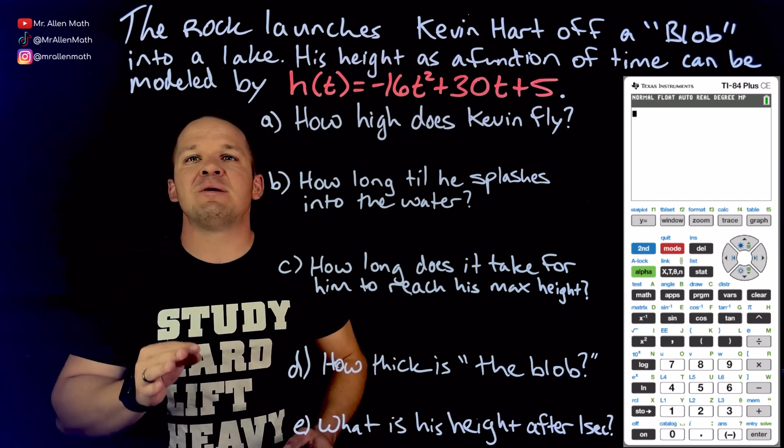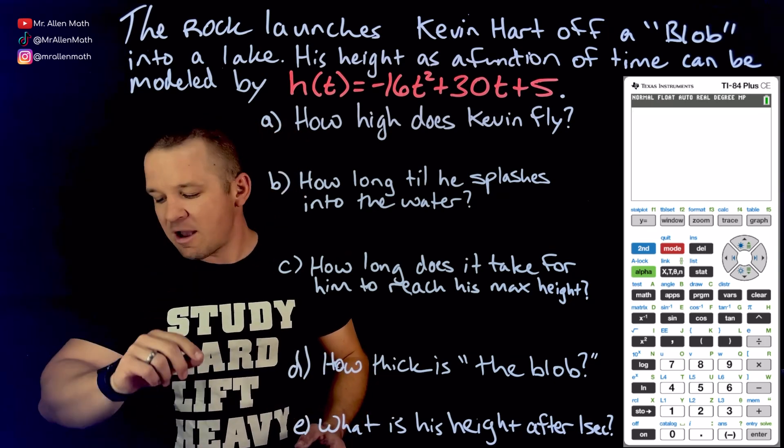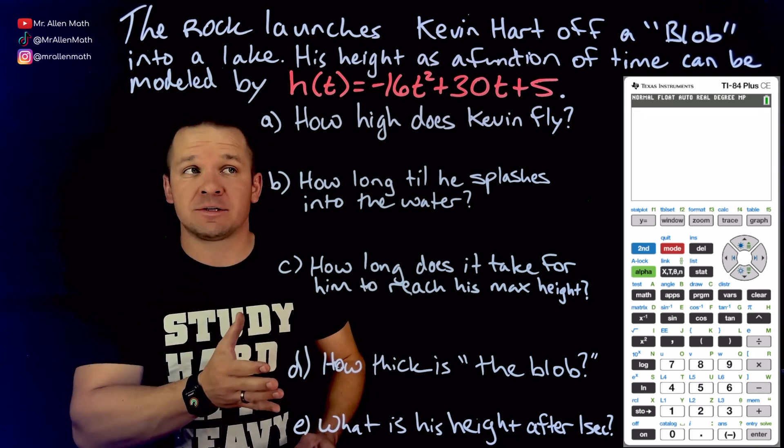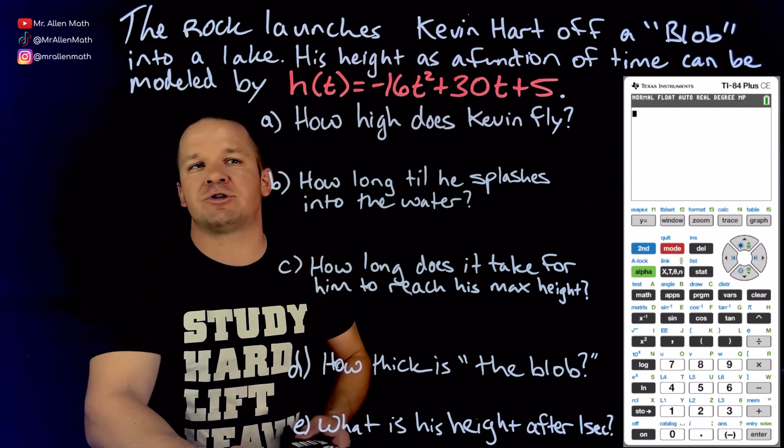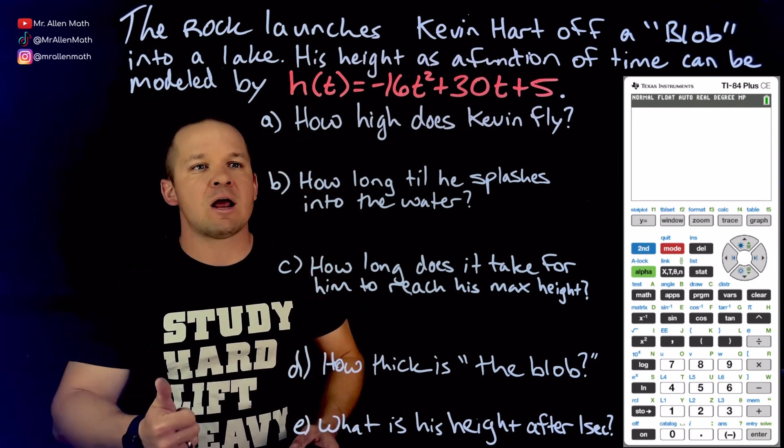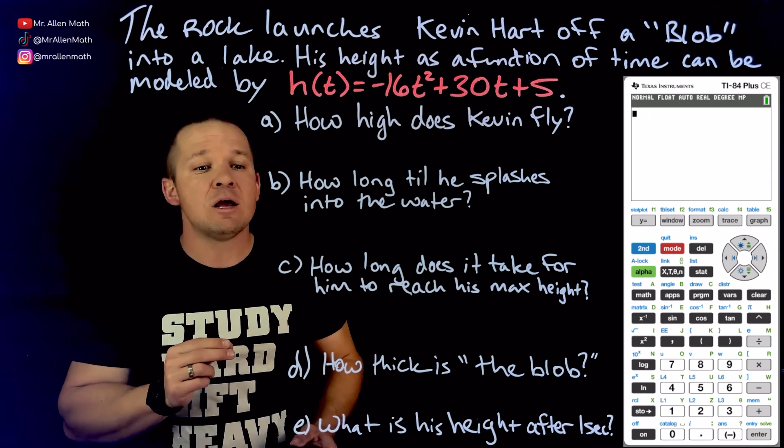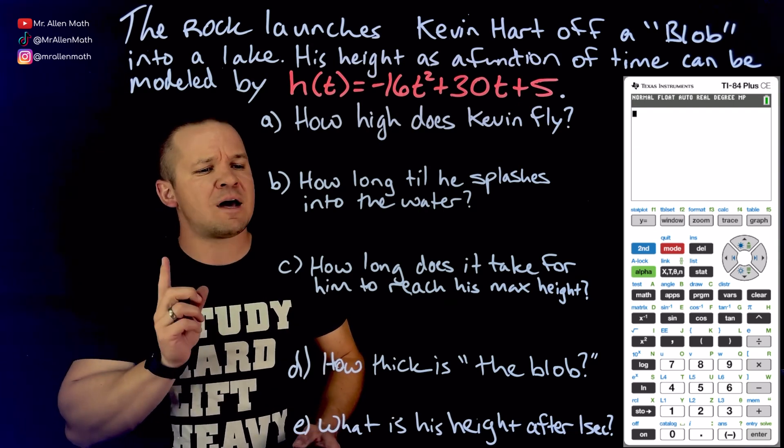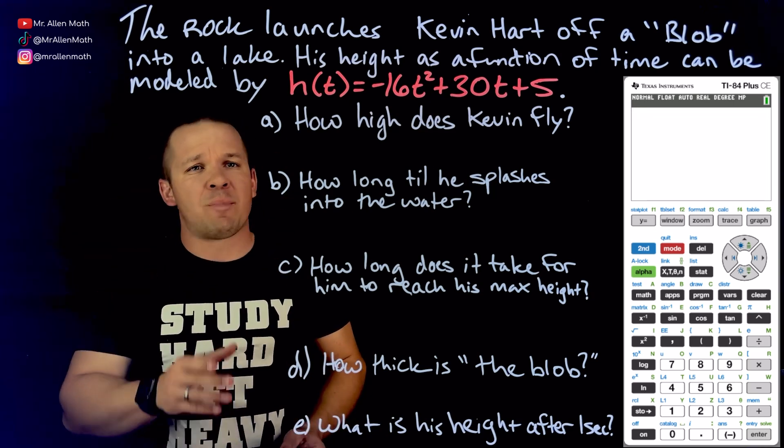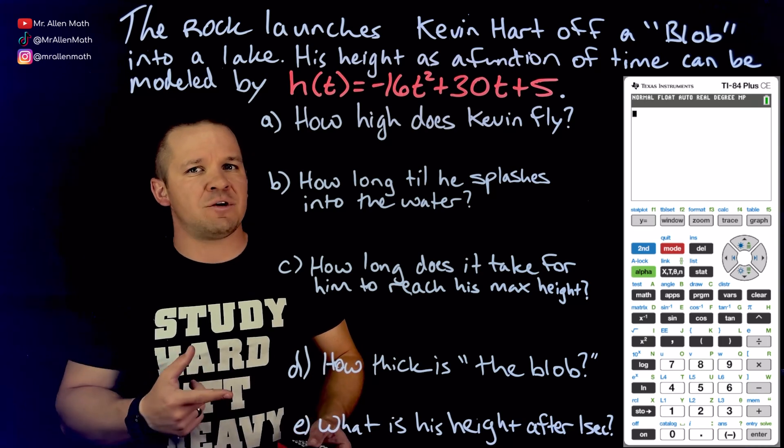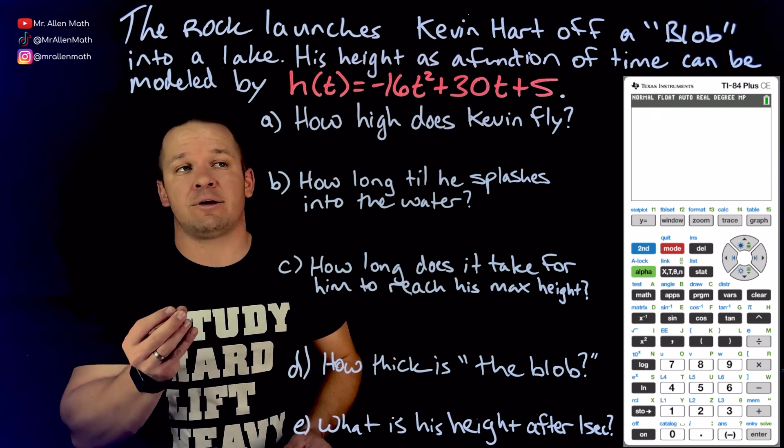His height as a function of time can be modeled by h of t equals negative 16t squared plus 30t plus 5. That would be Kevin Hart's height as a function of time. So we're going to graph this thing here in our calculator and try to answer these questions. We can answer these in any order you want, but I like to survey all the questions first just to see if there's a strategic order I should do them in.